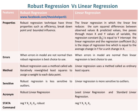Robust regression is less sensitive to outliers, whereas linear regression is more sensitive to outliers. The acronym for robust regression is robust linear regression, whereas acronyms for linear regression include ordinary least squares linear regression and standard linear regression.